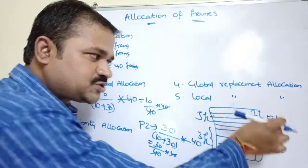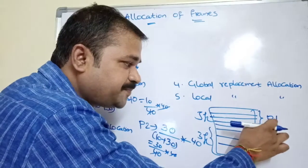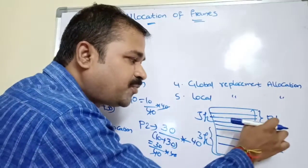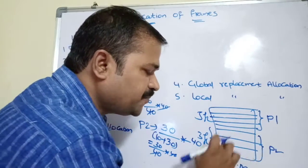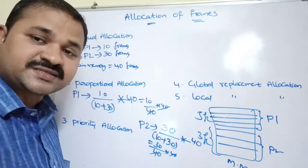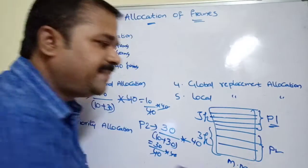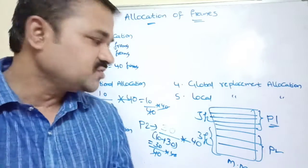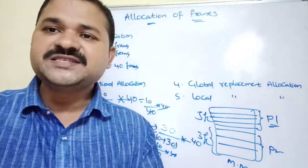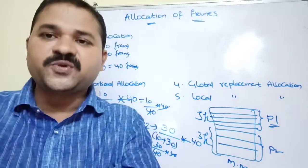However, the problem with global replacement allocation is that the paging behavior of one process can depend upon the paging behavior of another process. This is because page faults of one process depend on the page faults of another process — we are storing one process's pages in another process's frames. If process P1's page is stored in process P2's frame and P2 is a lower priority process, then process P1's page fault rate may increase. So that is the problem: the paging behavior of one process depends on the paging behavior of another.